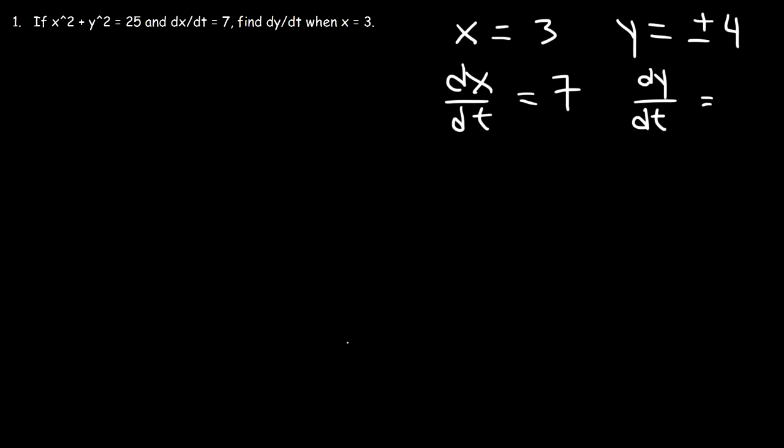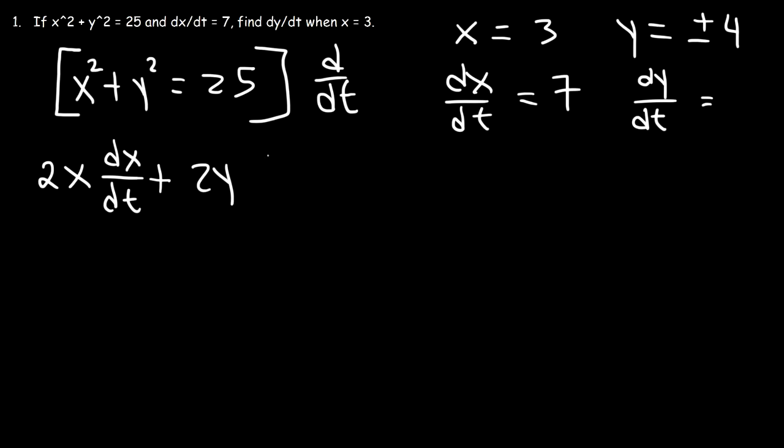Now, how can we calculate dy dt using this equation? What do you think we need to do at this point? We need to find the derivative with respect to time. So we have to differentiate both sides of the equation with respect to time. The derivative of x squared with respect to t is going to be 2x times dx dt. And for y squared, it's going to be something similar. It's going to be 2y times dy dt. 25 is a constant, and the derivative of a constant is 0.